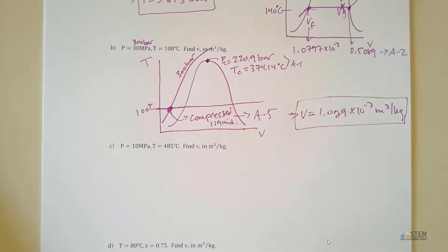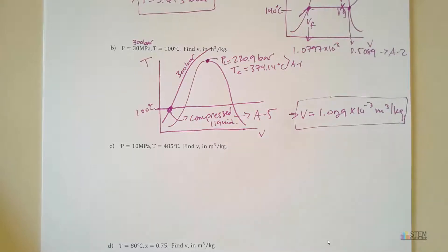Basically what you're doing is taking the information you're given and comparing it to the liquid-vapor table. That's how I always do it — I always compare to the liquid-vapor table first, and from there I can tell if I need to switch to a compressed liquid table or if I need to go to a superheated vapor table. I always start with the liquid-vapor table first.